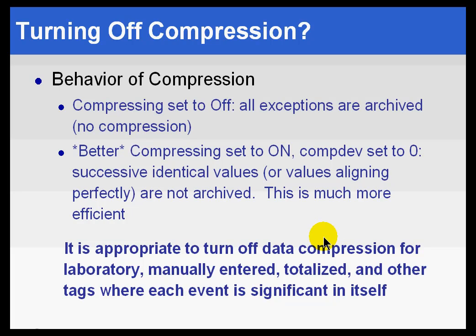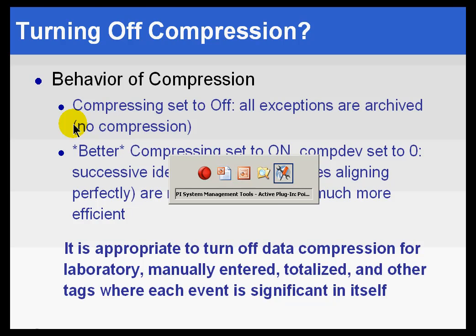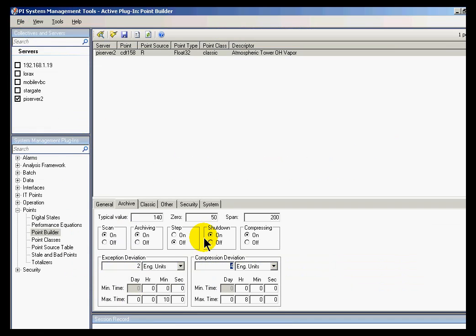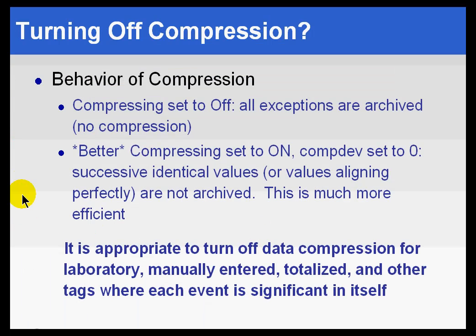For compression to be turned off, it's not a problem. It's just that you're going to get an awful lot more data than you actually need to have, but it's fairly simple to do. There's a field called compressing. Let's take a look at the field right here. I simply turn it off, and at that point, as you can see, this is dimmed out because we no longer will obey what's in those deviations. So compressing can be turned off.